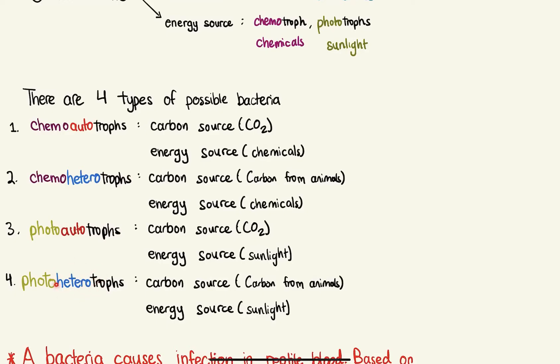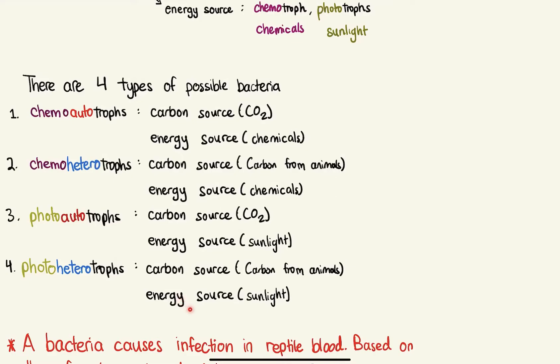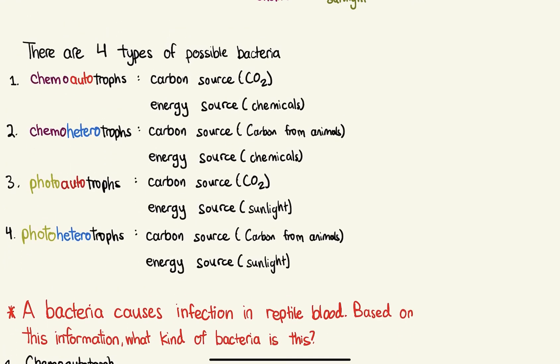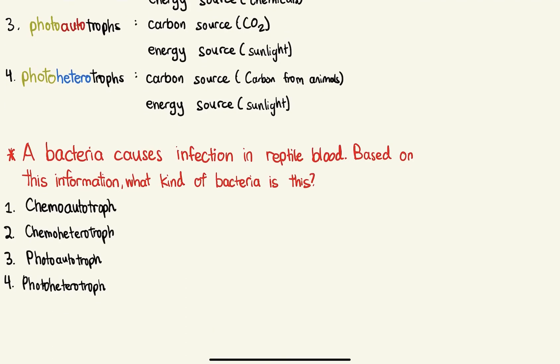And then hetero is just a difference of the carbon source. And that just means that we have the photo energy source, the sunlight. And the heterotroph means that the carbon source is from other animals. Very simple. So here is a question that will hopefully help us understand if we understand this or not.